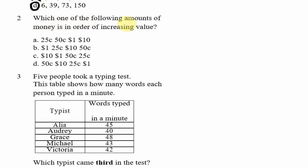Question 2: Which one of the following amounts of money is in order of increasing values — meaning progressing from smallest to largest? Option A has 25 cents, then 50 cents, then one dollar, then 10 dollars — each value is greater than the previous. So option A fits that criteria and is our answer.